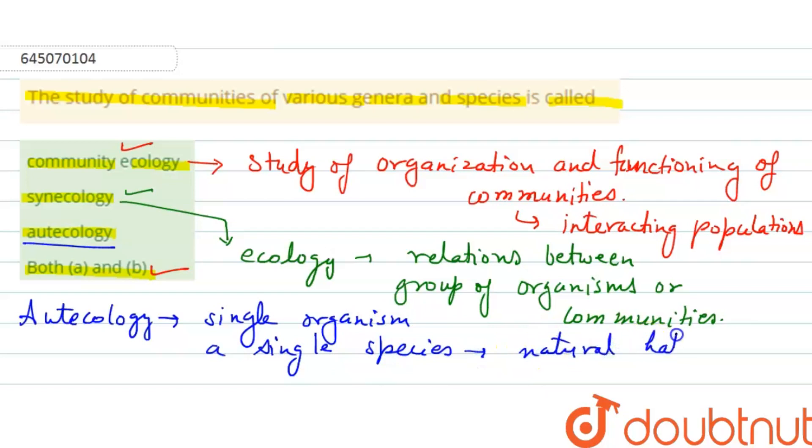Natural habitat, right. While the synecology, there is a study of group of organisms belonging to the different species and communities in respect to their natural habitats, right. So autecology is wrong here, that is the study of single organism.